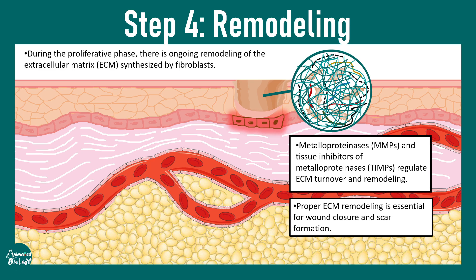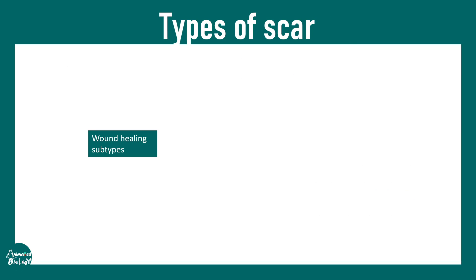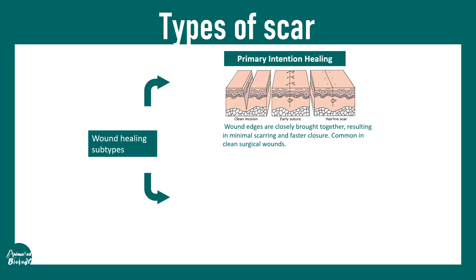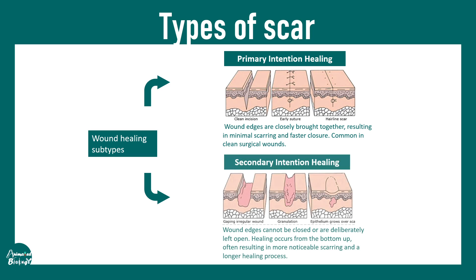There are different types of wound closure. In primary intention healing, the wound edges are closely brought together — for example by sutures — forming a clean cut. This is found in surgical wounds. In secondary intention healing, the wound edges are far apart and cannot be brought together, so healing starts from the bottom and works upward. This bottom-up healing approach forms a distinct scar, sometimes a keloid as well.